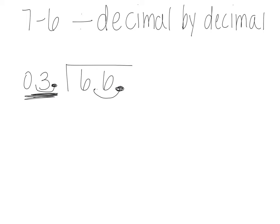So 6.6 divided by 0.3 is the same thing as 66 divided by 3 because I moved that decimal over here once to the right and once to the right in the dividend.